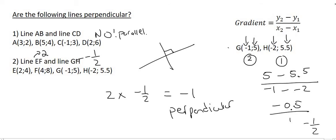Some lines cross each other but don't make an angle of 90 degrees. But if they do make an angle of 90 degrees, then we call them perpendicular, and that happens when you multiply the two gradients together and get minus 1.